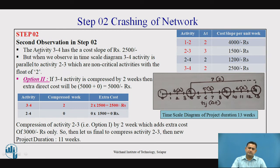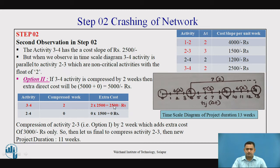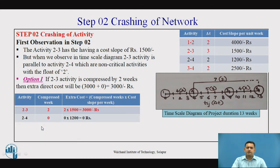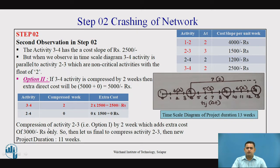Second option: after activity 2-3 at cost slope 1,500, the next minimum is 2,500, which belongs to activity 3-4. Activity 3-4 also has activity 2-4 as its parallel activity. If I compress activity 3-4 by 2 weeks, the extra cost will be 2 × 2,500 = 5,000. Comparing Option 1 (3,000) and Option 2 (5,000), Option 1 is better. So I will go with compression of activity 2-3 by 2 weeks, adding an extra cost of 3,000 only.